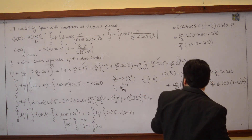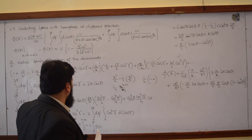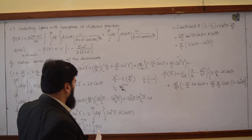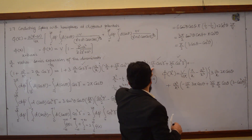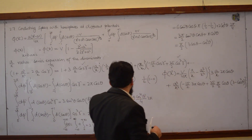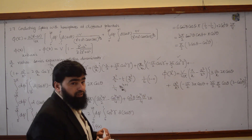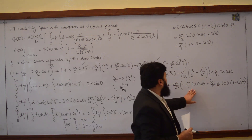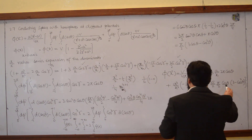3π cosθ is coming from this term. So 15/2, a cube over x cube, and cos gamma — for cos gamma I am writing 2π this one. You can redo this by just multiplying them out: like you can write 3 cosθ and then cos³θ.